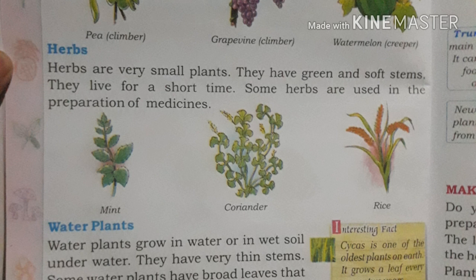Water plants grow in water or in wet soil. They have very thin stems. Some water plants have broad leaves that help them float in water.